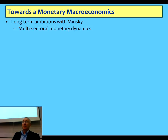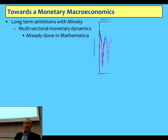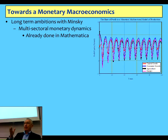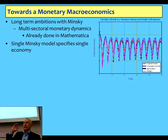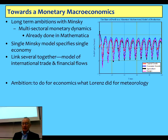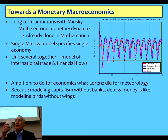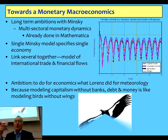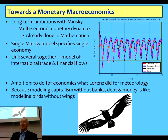The long-term ambition is to go beyond a single sector to multi-sectoral dynamics — I've already done that in Mathematica with a four-sector model with dynamic pricing. A single model describes one economy; an identically structured model with different parameter values and reaction functions describes another national economy, and you can link them with international financial and trade flows. The goal — using meteorology as the analogy — is to build something as powerful as Lorenz's model in meteorology, but without the absurd assumptions neoclassical theory requires. Fundamentally, we've been modeling capitalism without bank-created money — a bit like modeling birds without wings.